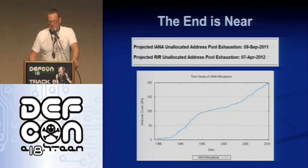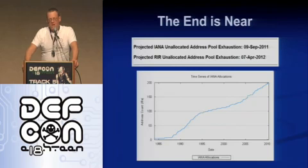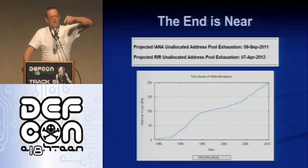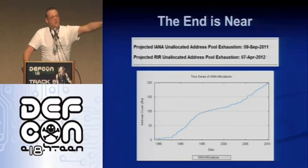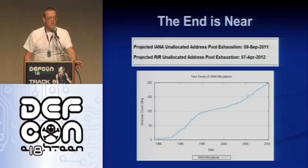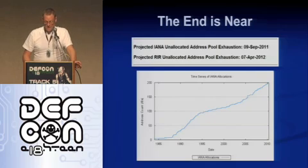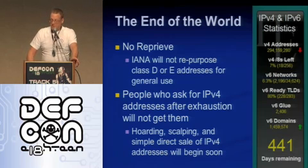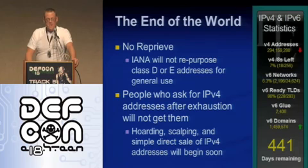Here's the projected timetable: the main reservoir of addresses will run out in 2011. The regional internet registries will have some leftover which they can continue to distribute, and they will begin running out in 2012. And then people will find there won't be any more IP addresses available. That's the end of the world — the internet is full. Pack up the internet and go do something else.